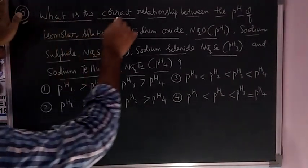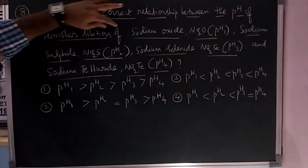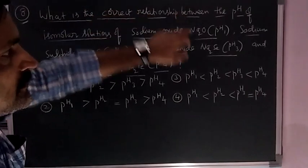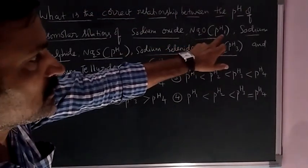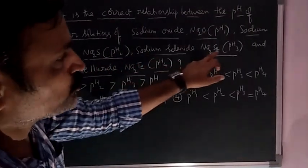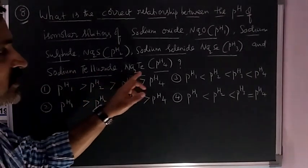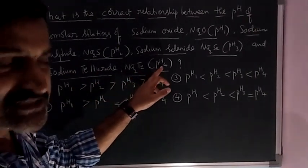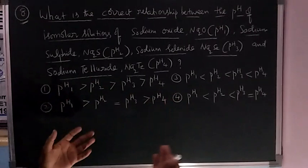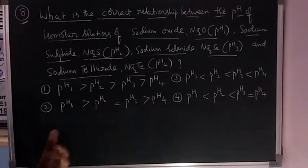What is the correct relationship between the pH of isomolar solutions of sodium oxide Na2O (pH1), sodium sulfide Na2S (pH2), sodium selenide Na2Se (pH3), and sodium telluride Na2Te (pH4)? We have to give the relationship between pH1, pH2, pH3, and pH4 according to the concept.